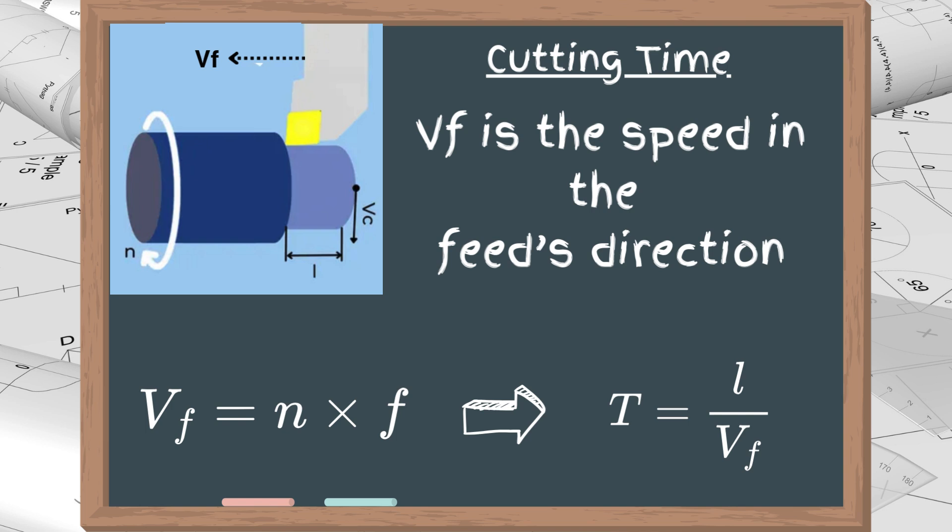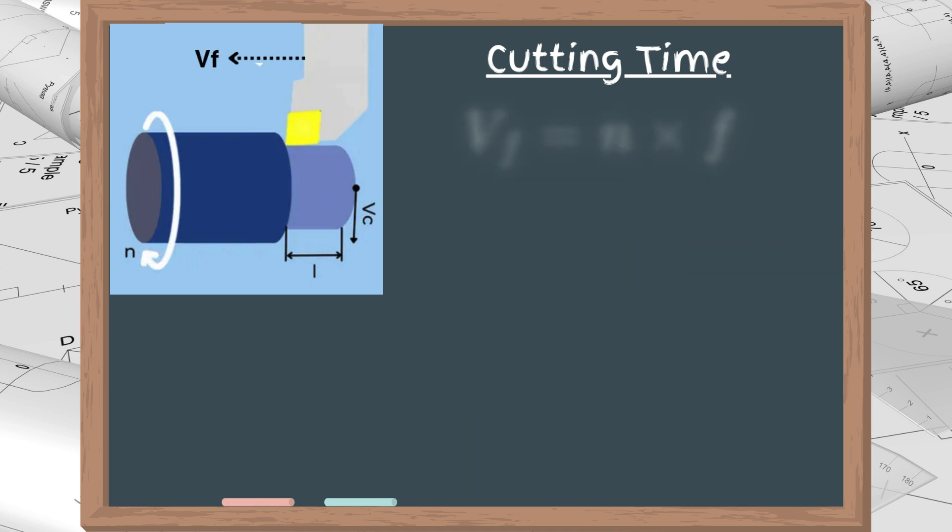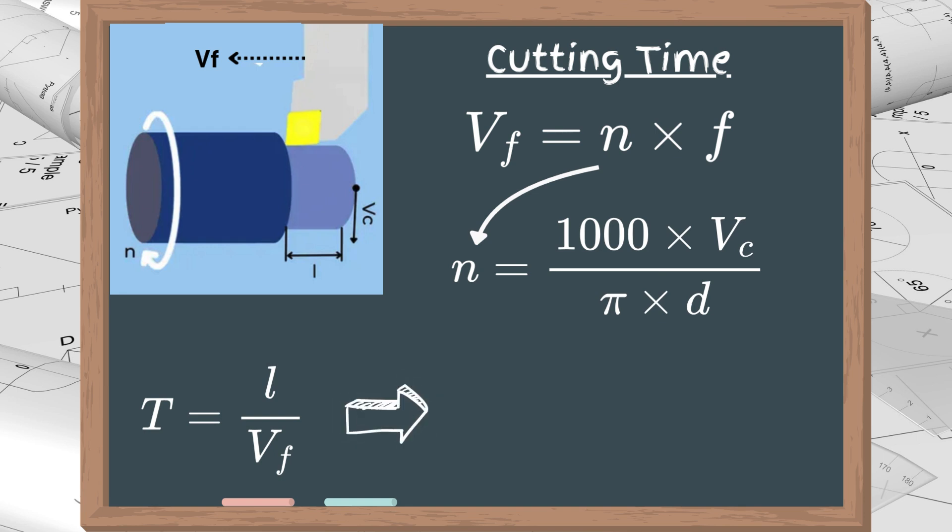However, in most cases, we know the cutting speed, not the spindle speed. If we substitute n with the spindle speed formula from the beginning of the video, we get the final formula for the time in minutes. For metric units, it is L times pi times D divided by 1000 times F times Vc. If the cutting data is in imperial units, substitute 1000 with 12.